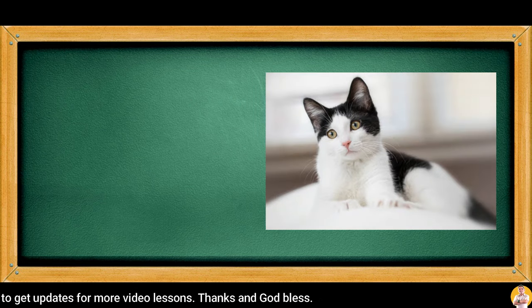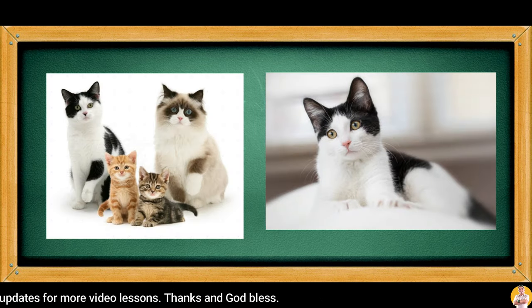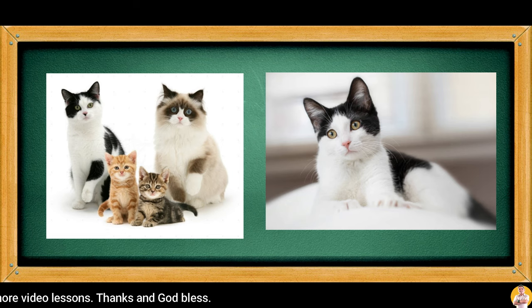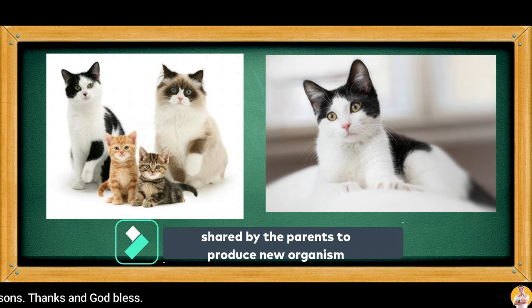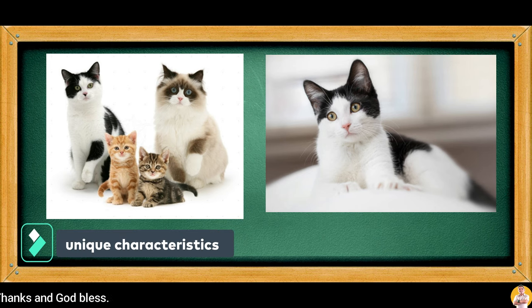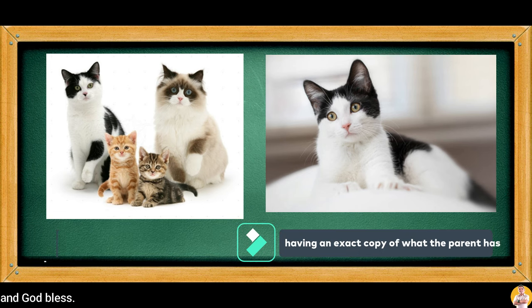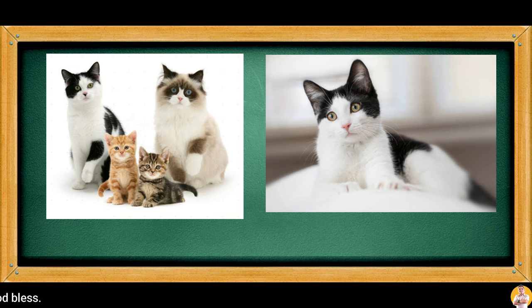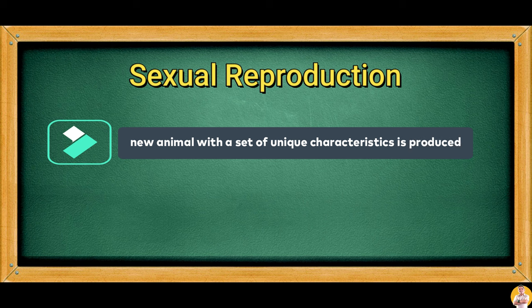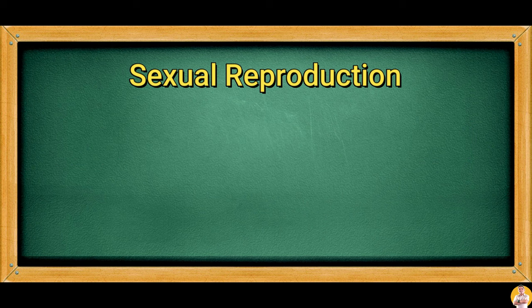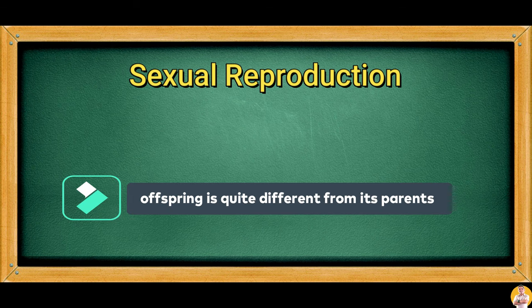Reproduction involves the transfer of characteristics of parents to their offspring. During fertilization, genetic materials like DNA are shared by the parents to produce a new organism that may possess unique characteristics or have an exact copy of what the parent has. In sexual reproduction, a new animal with a set of unique characteristics is produced, meaning the offspring is quite different from its parents.